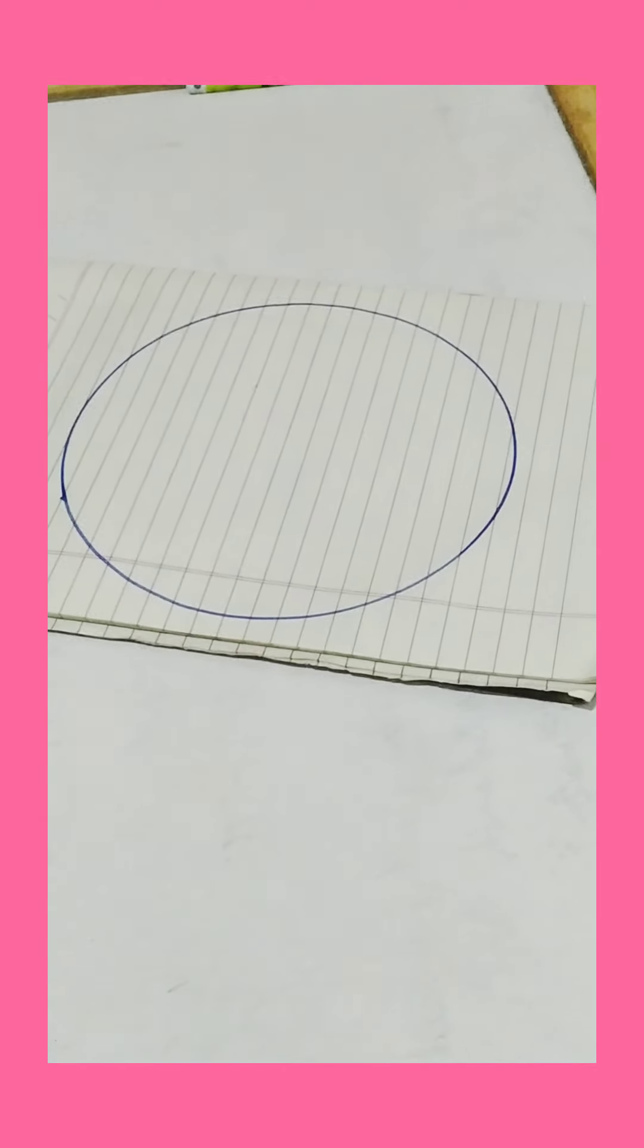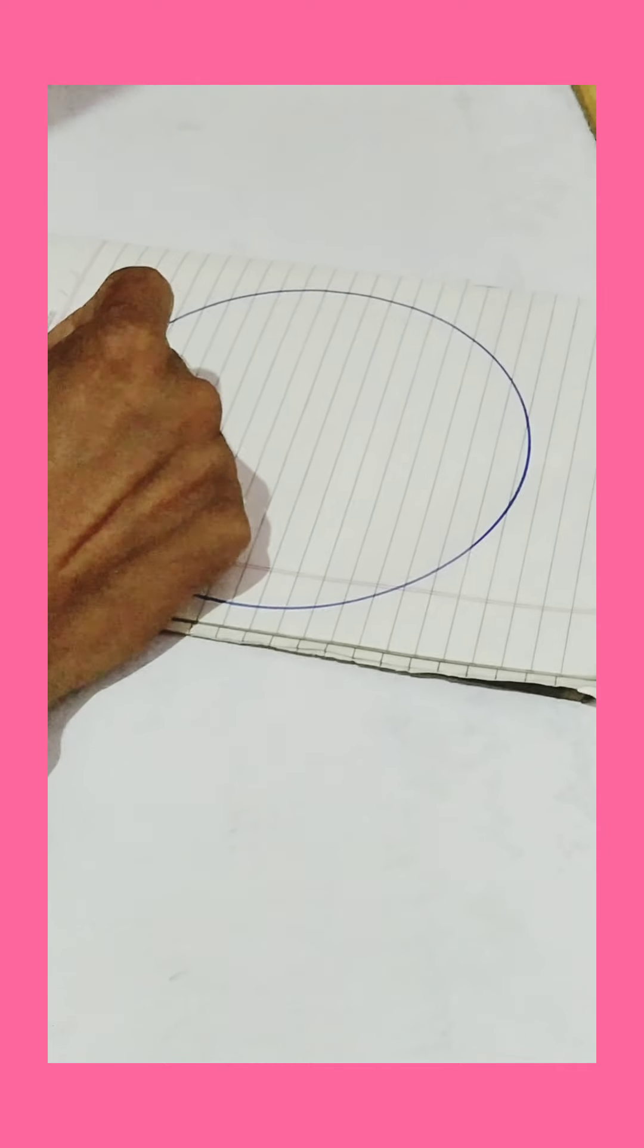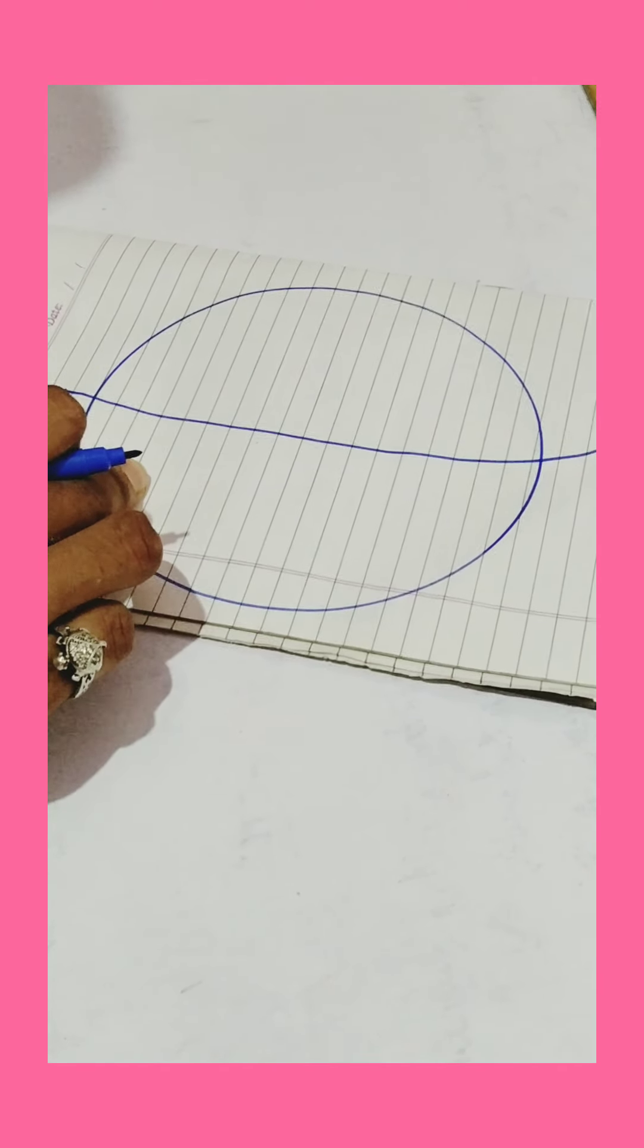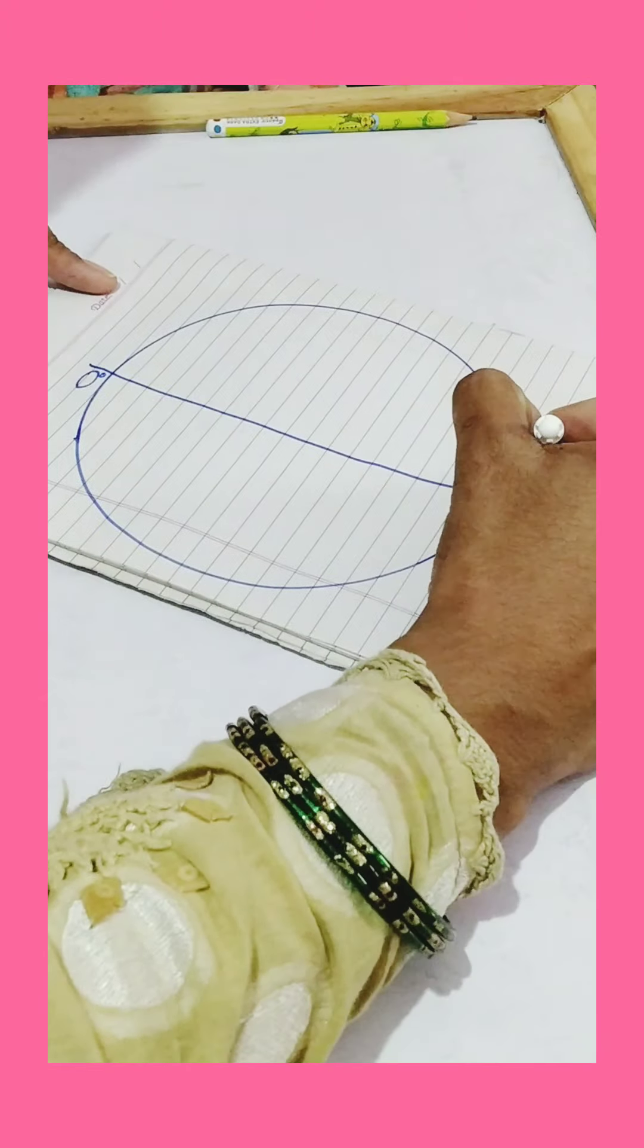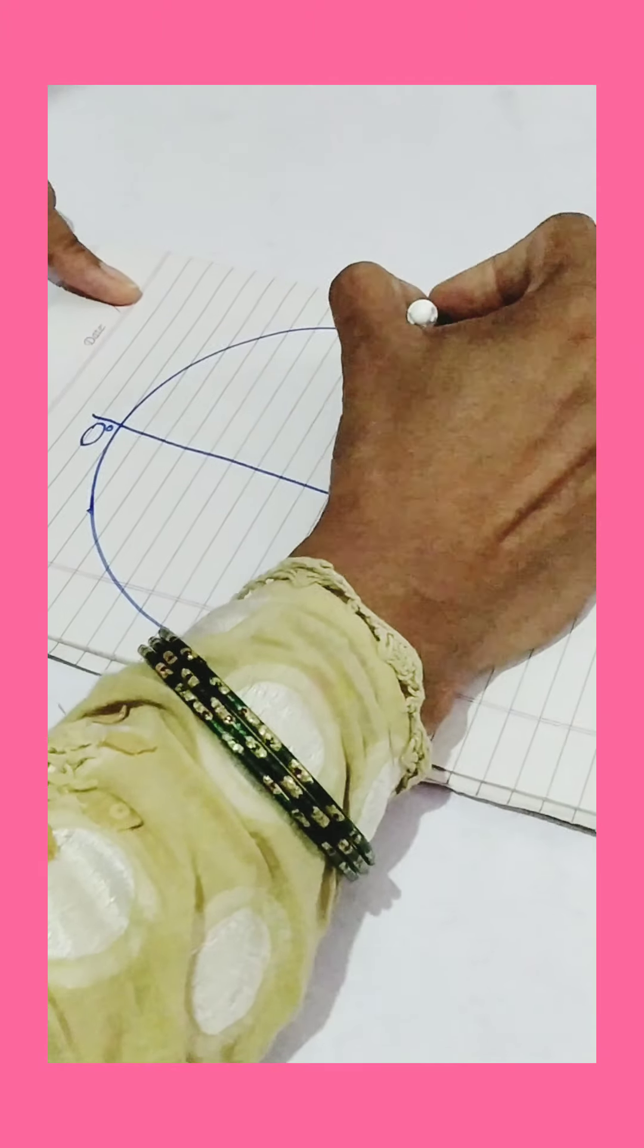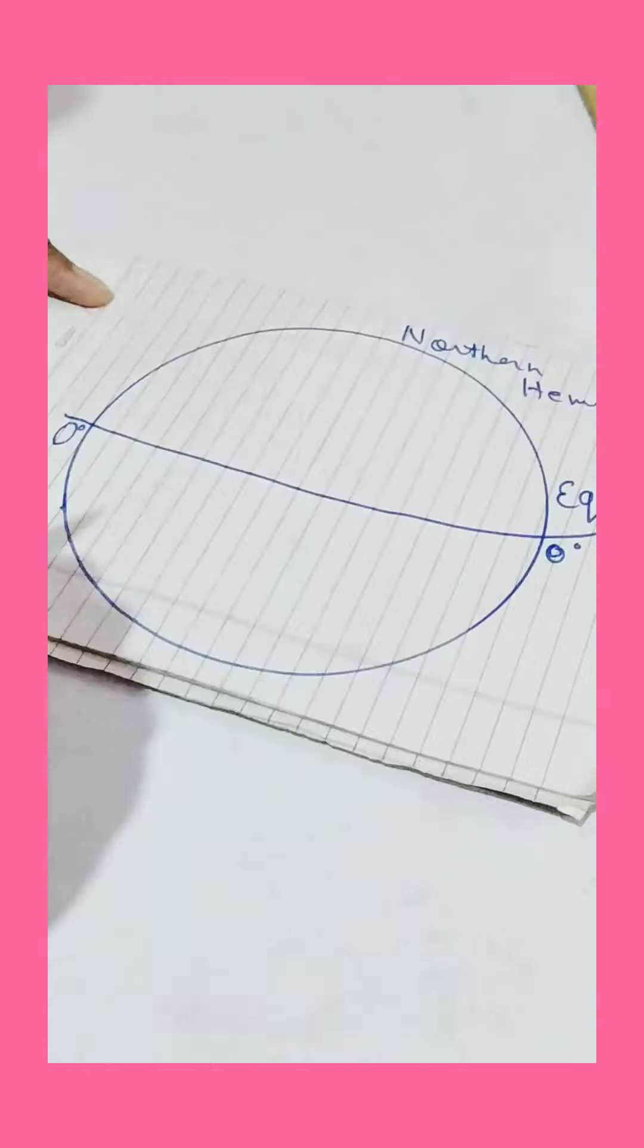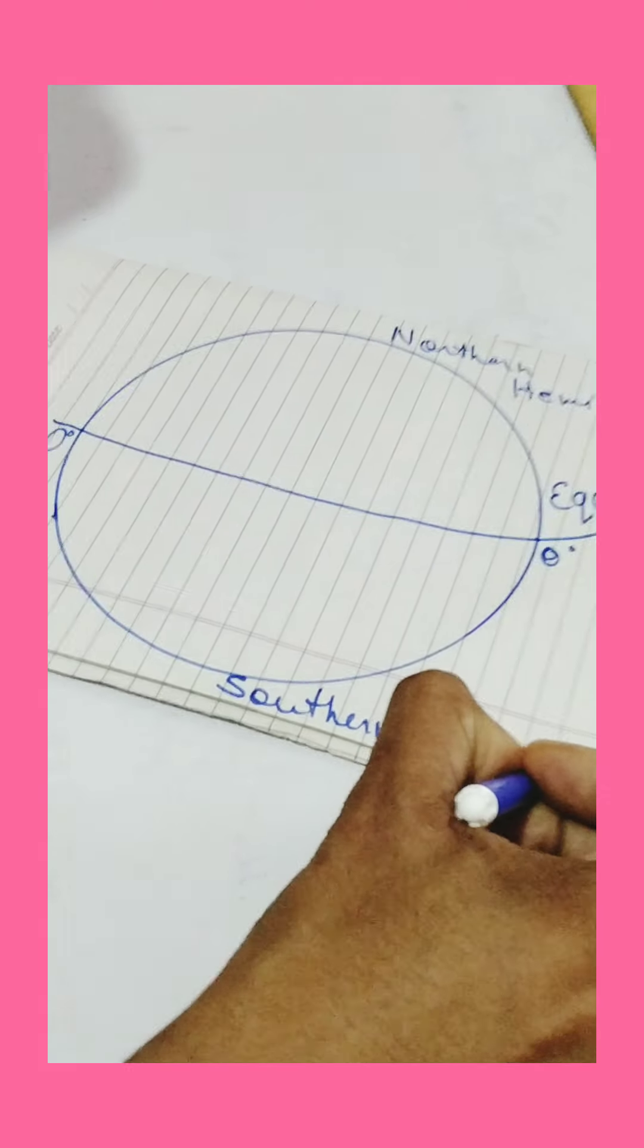Students, as you can see, this is a circle. As we know that our earth is in the round shape like this. This is an imaginary latitudinal line at 0 degree that is called equator. It divides our earth into two equal parts: the northern hemisphere and southern hemisphere.